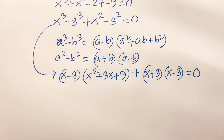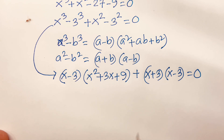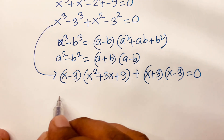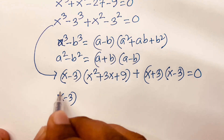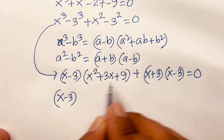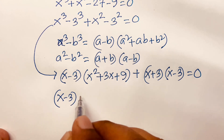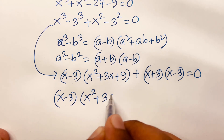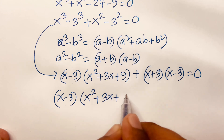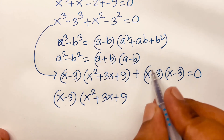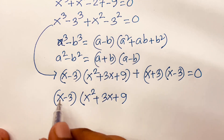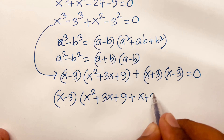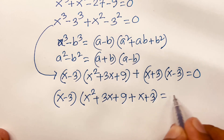Here (x minus 3) is common, so factoring it out: (x minus 3) times (x² plus 3x plus 9) plus (x plus 3) is equal to 0.